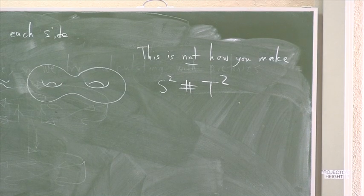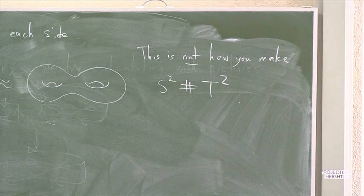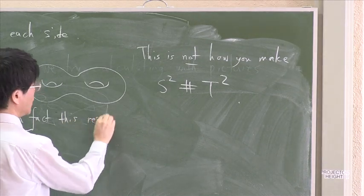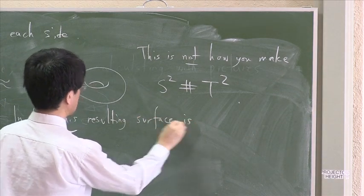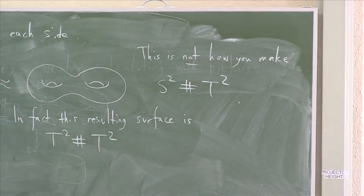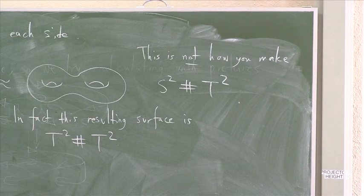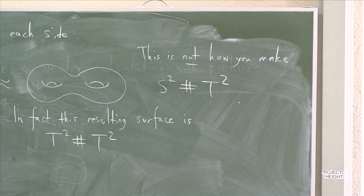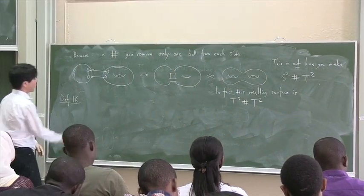If you take the honest connected sum of S² and T², you would get just the T². In fact, this resulting surface is the connected sum of T² and T². You can probably see, right? If you have a torus on one side, torus on another side, and you do the connected sum, you get this. So it's not the same thing.